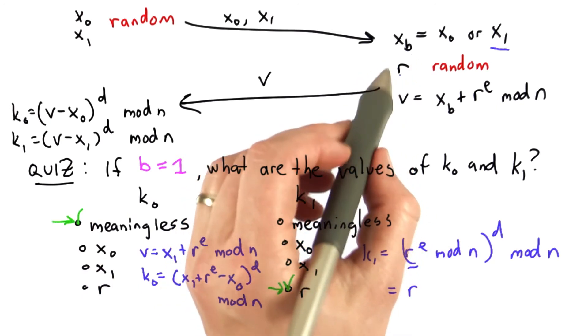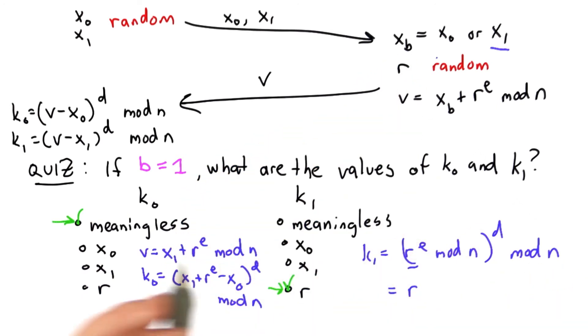So Alice has now learned the random r selected by Bob. Its value is stored in one of these keys, but she doesn't know which one.